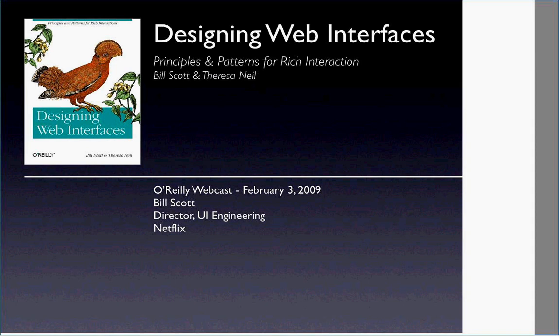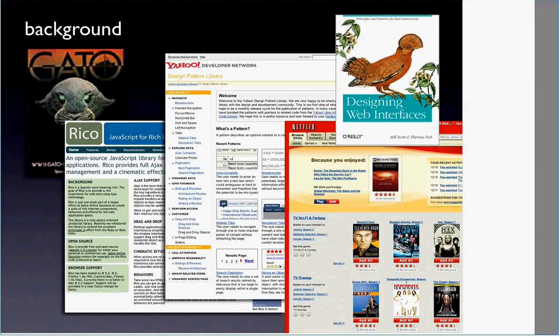Today we're going to be talking about designing web interfaces. This presentation doesn't cover everything in the book — the book's about three or four hundred pages. The idea of the book came out of giving lots of talks and spending time at Yahoo as well as other places and here at Netflix. My background going back to 1985 was writing a game for the Macintosh called Gato Submarine Simulation. That's where I got my real interest in interaction design and user interface engineering. Later I did a library called Ricoh, an Ajax framework, and then at Yahoo I did the Yahoo Design Pattern Library. Some of the work in the book is based on pattern library research I did there. Now I'm at Netflix where I direct the user interface engineering, and I just released the book.